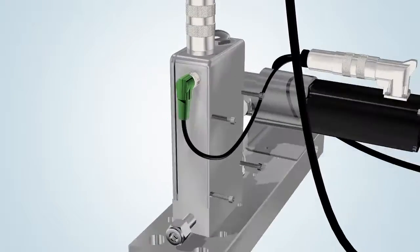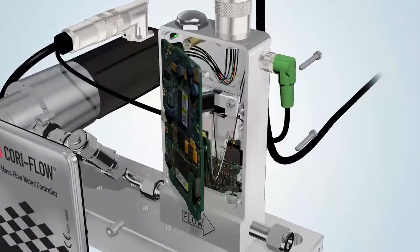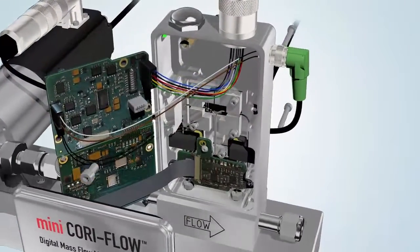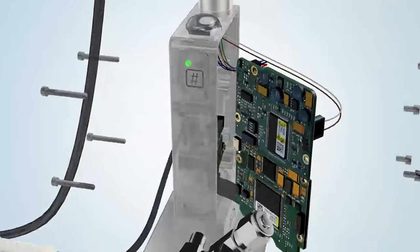Inside the robust Mini CoriFlow housing are the digital electronics, optical sensor, and sensor tube. The internal diameter of the sensor ranges from 0.25 mm to 3.1 mm.